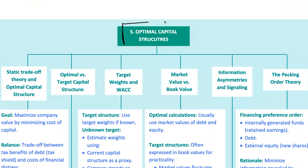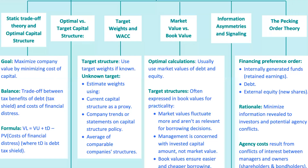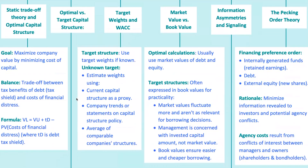So how do companies find the sweet spot in their capital structure? According to the static trade-off theory, a company aims to balance the tax benefits of debt against the costs of financial distress. The optimal capital structure is where the company's value is maximized and WACC is minimized. Finding this exact point is incredibly tough — most companies aim for a target capital structure close to this optimal point, adjusting as market conditions change. Microsoft, for instance, maintains a relatively low debt level despite having a high capacity to borrow, focusing on financial flexibility and maintaining a top credit rating.